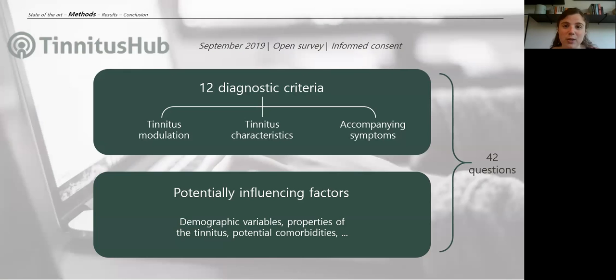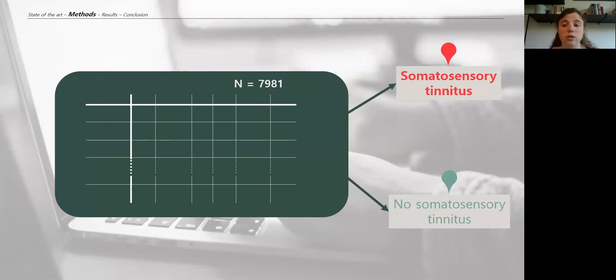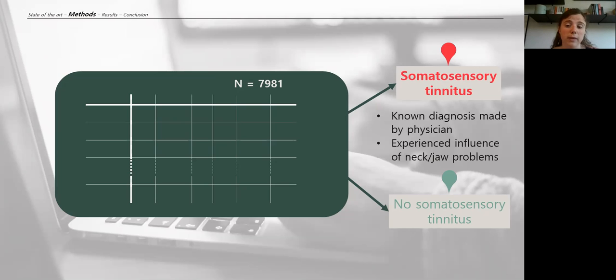We had quite an enthusiastic response to the survey, and in the end, our data set contained data from almost 8,000 participants who filled out this survey completely. First of all, we distinguished those participants with somatosensory tinnitus from those without it. We based our decision on whether or not there had been a diagnosis of somatosensory tinnitus made by their physician, and whether the degree to which they themselves experienced any influence from neck or jaw problems on their tinnitus. I will quickly already show you the distribution. We saw in this data set that about 10% of all participants received somatosensory tinnitus.